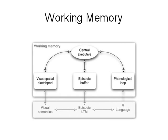Working memory involves the idea of a central executive — a part of your mind that oversees the memory processes while not itself doing any remembering. It's responsible for two, and later three, slave systems. One of these is the visuospatial sketchpad that deals with visual memories. Another is the phonological loop that deals with acoustic or sound-based memories. And a third, introduced by Baddeley in the year 2000, is the episodic buffer, which seems to blend together the visual and the acoustic elements into a memory episode, which is then stored in long-term memory.